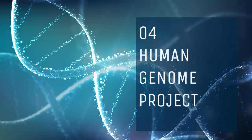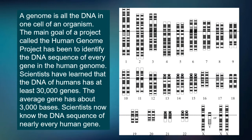Human Genome Project. A genome is all the DNA in one cell of an organism. The main goal of the Human Genome Project has been to identify the DNA sequence of every gene in the human genome. Scientists have learned that the DNA of humans has at least 30,000 genes, and the average gene has about 3,000 bases. Scientists now know the DNA sequence of nearly every human gene.